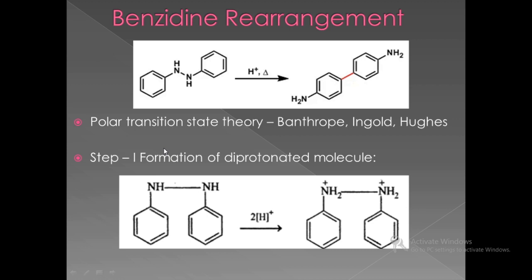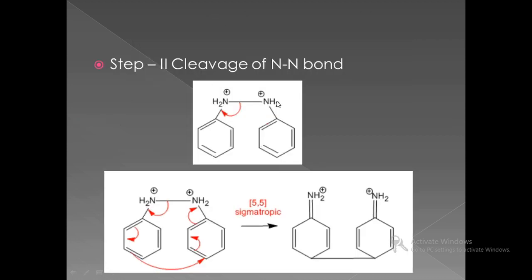In the first step of this mechanism, a diprotonated molecule is formed. This is the starting material hydrazobenzene, which is protonated by the acid so that the two nitrogen atoms are protonated to form a diprotonated molecule. In the second step, the bond between the two nitrogen atoms breaks. The sigma bond is broken and shifts from its position, resulting in a new carbon-nitrogen double bond. Consecutive bond shifting takes place, and the double bond in the first benzene ring is transferred to the para position of the second benzene ring. Another consequence of bond shifting then takes place to give a new structure.